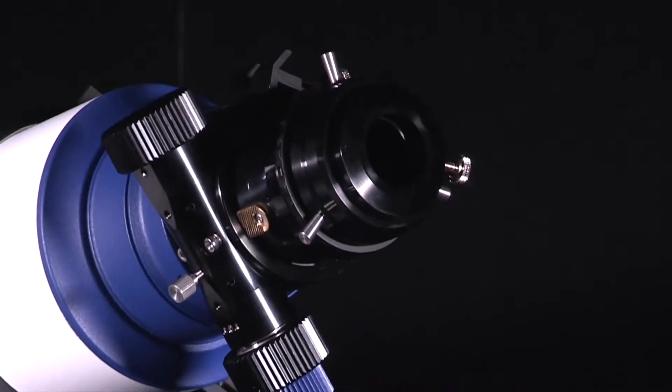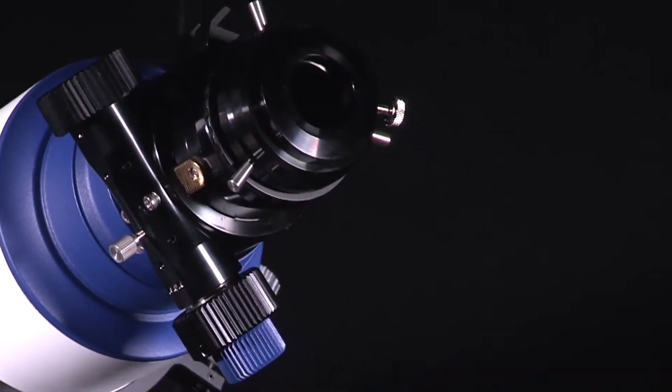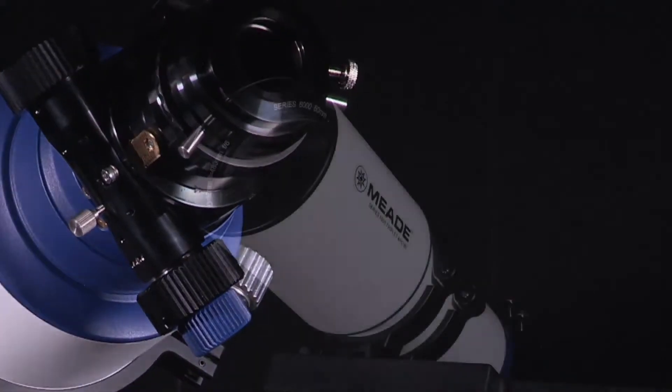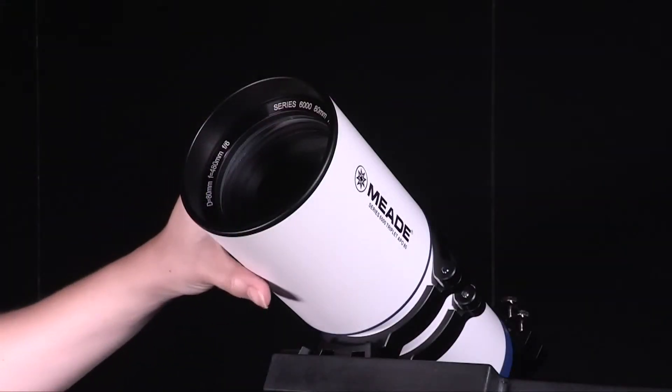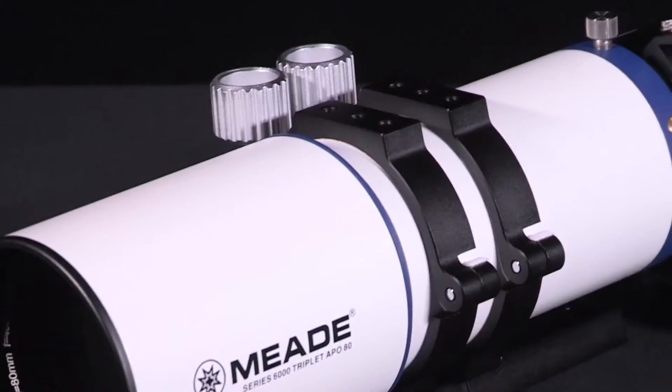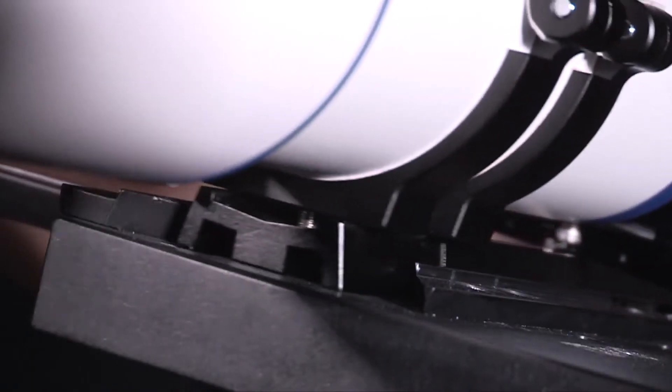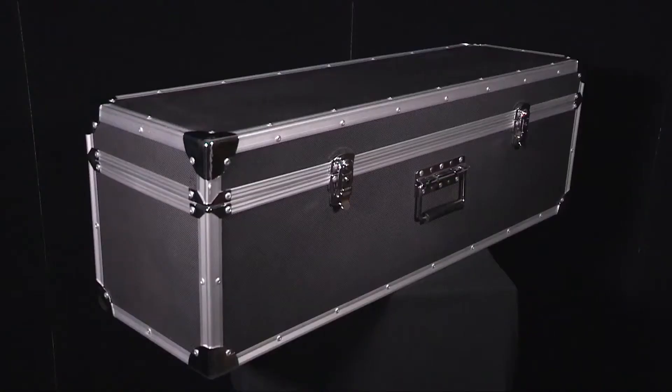This focuser includes a 2-inch self-centered locking ring that allows diagonals or cameras to be well-centered to the optical train every time the locking wheel is engaged. Standard equipment includes a fully extendable dew shield, mounting rings, a Vixen-style dovetail, and an aluminum hard carry case to protect your investment when not in use.